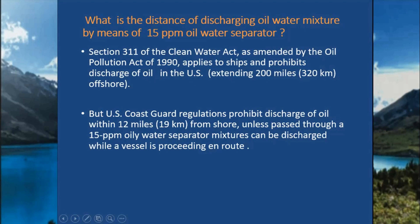US Coast Guard regulations prohibit discharge of oil within 12 miles or 19 kilometers from shore unless it has passed through a 15 ppm oily water separator, which can only be used while the vessel is proceeding in route. Note that the oily water separator cannot be used in port unless port state control or other relevant authorities are inspecting the OWS during its activation.